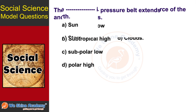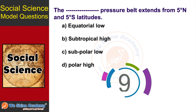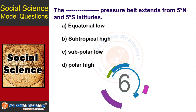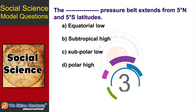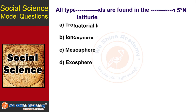The next question is: dash pressure will extend from 5 degrees north and 5 degrees south latitude. In 10 seconds, find the answer. The answer is Option A: Equatorial Low.